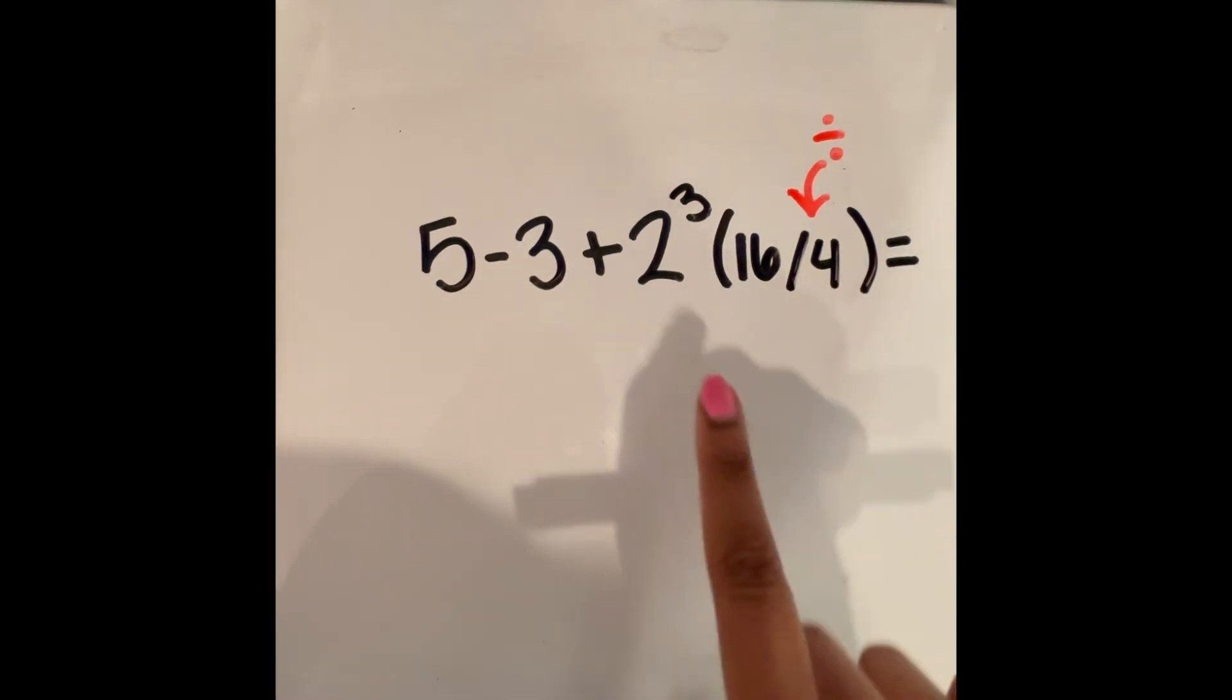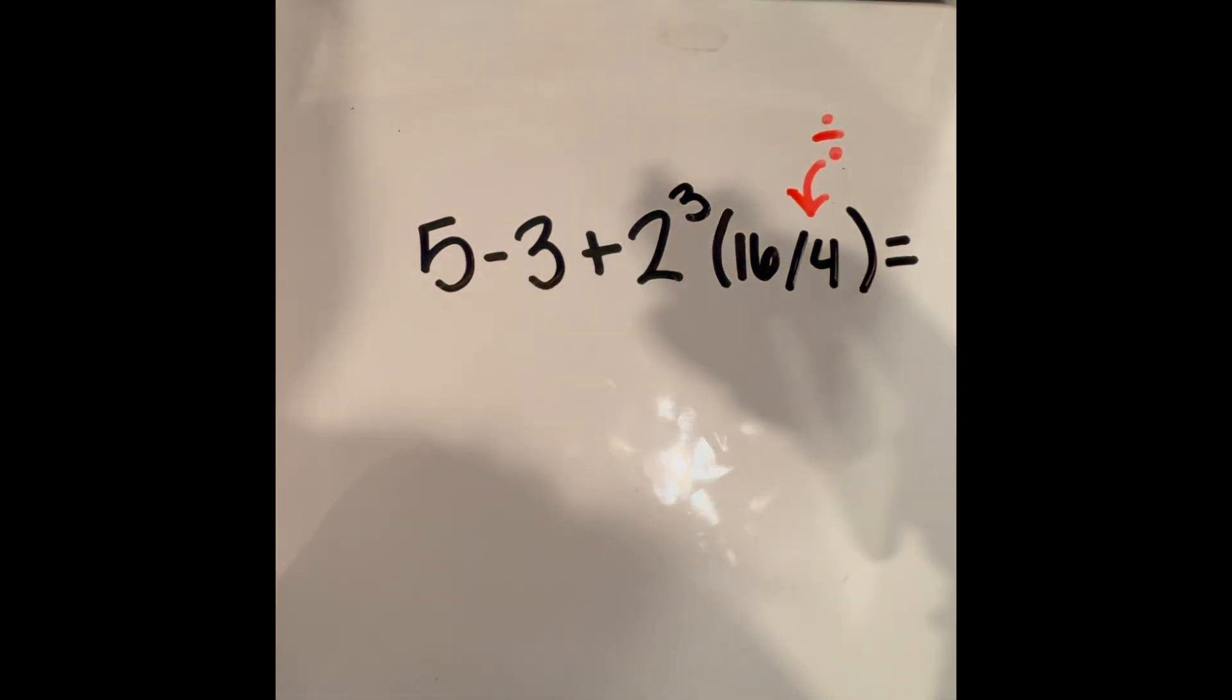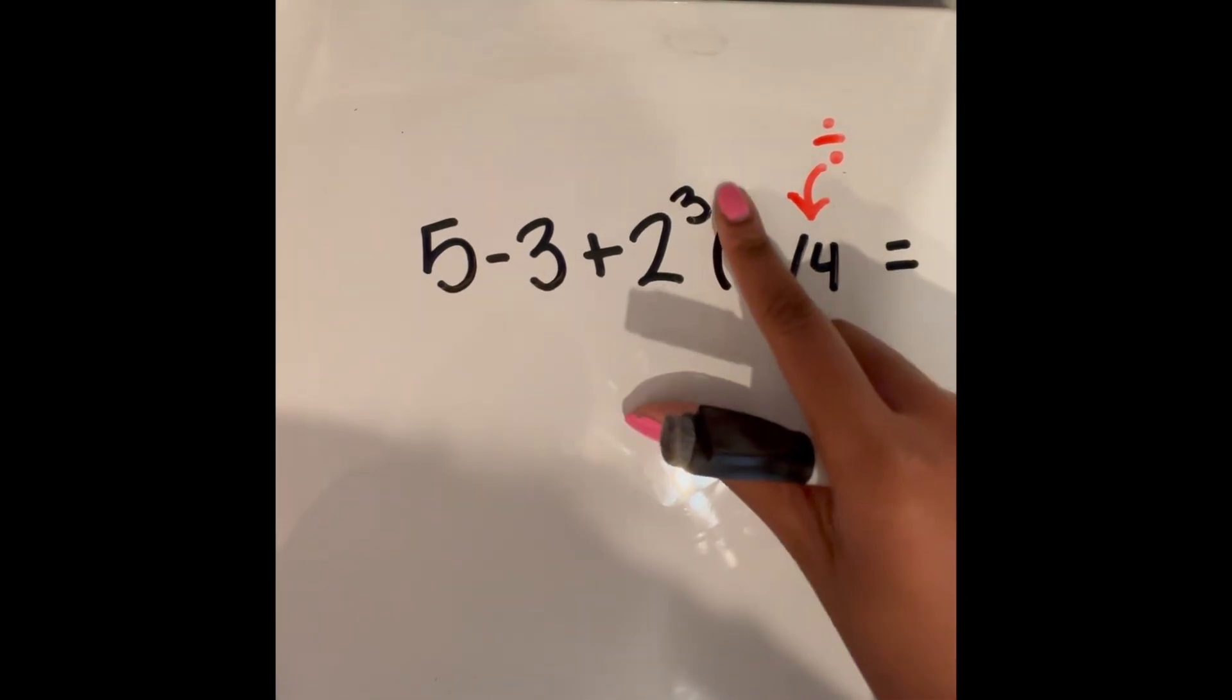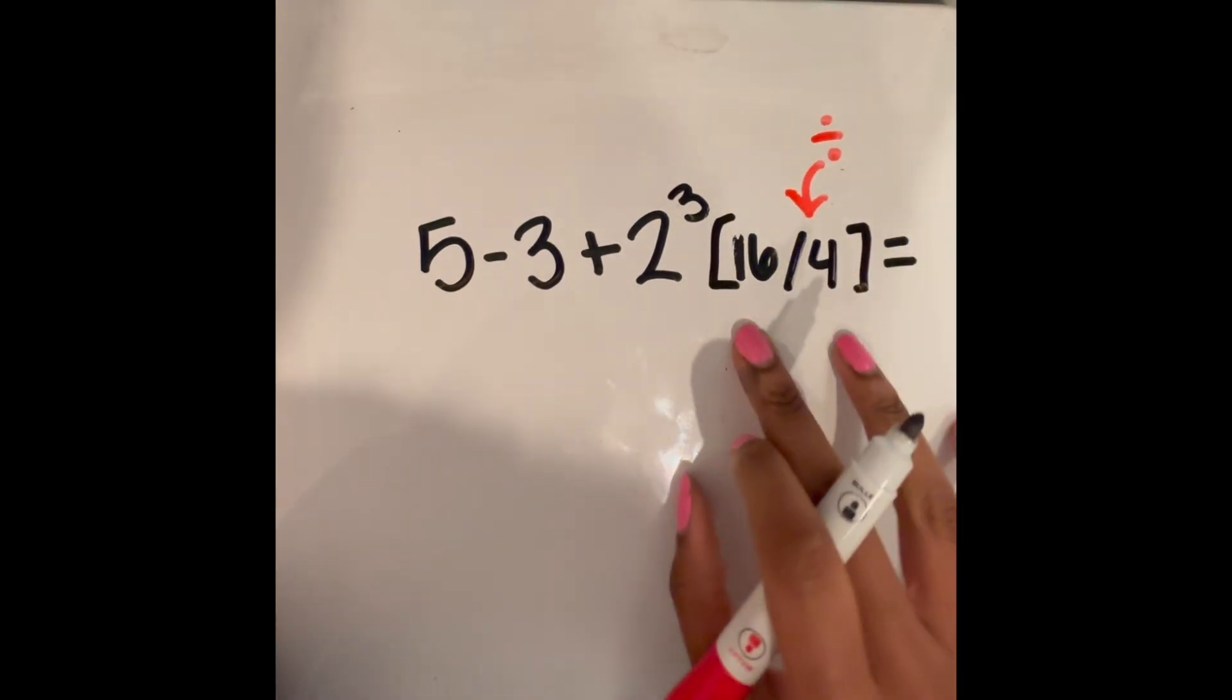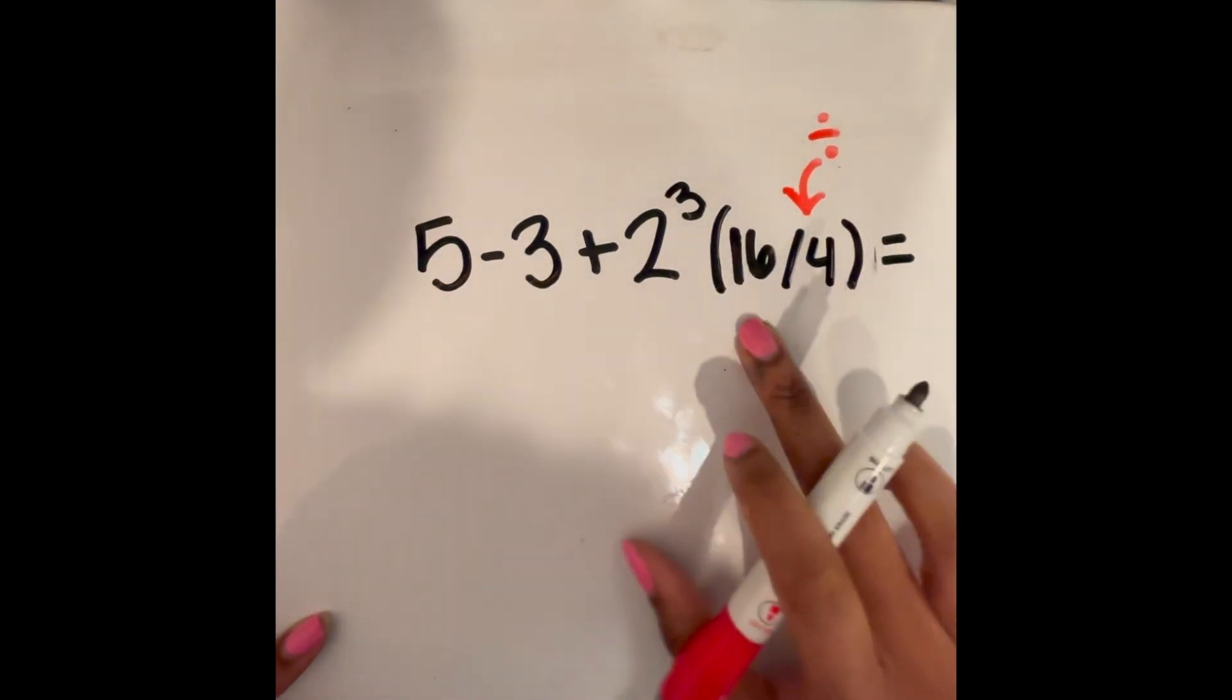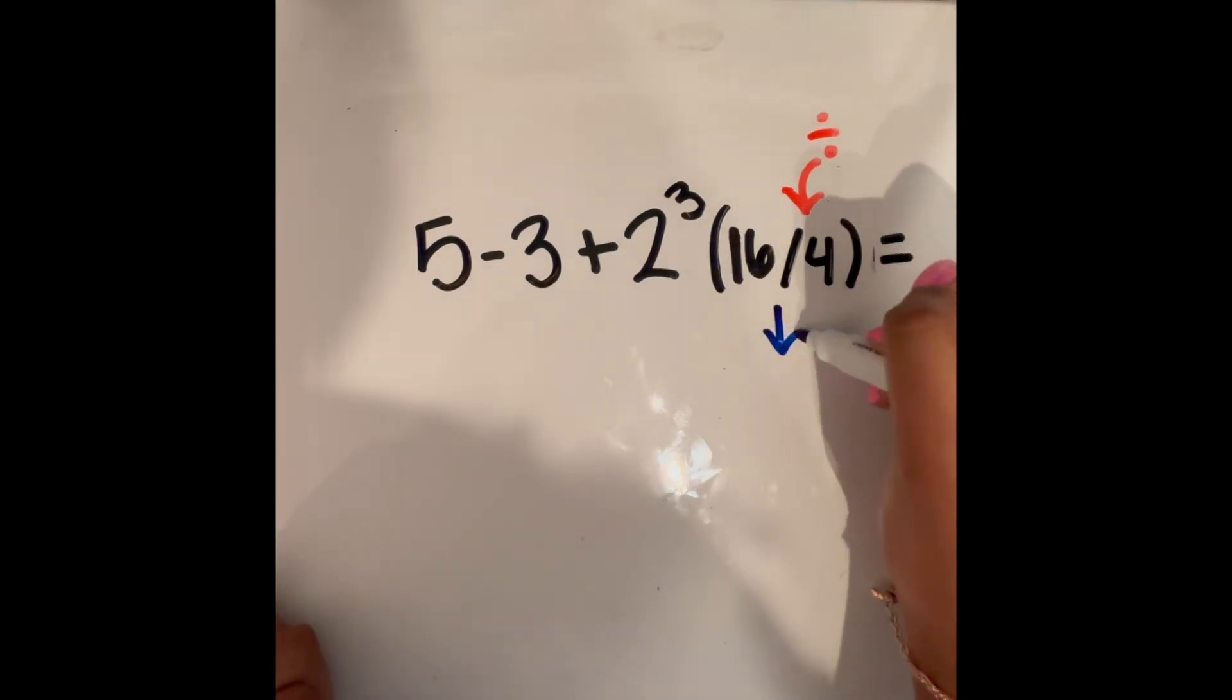According to PEMDAS, according to the order of operations, the first operation that we are supposed to solve is P parentheses or grouping. So parentheses, we have our parentheses right here, but if these were written with straight brackets, we would solve this first as well. So we have our parentheses. What's in our parentheses is 16 divided by 4. So 16 divided by 4, we know is 4.